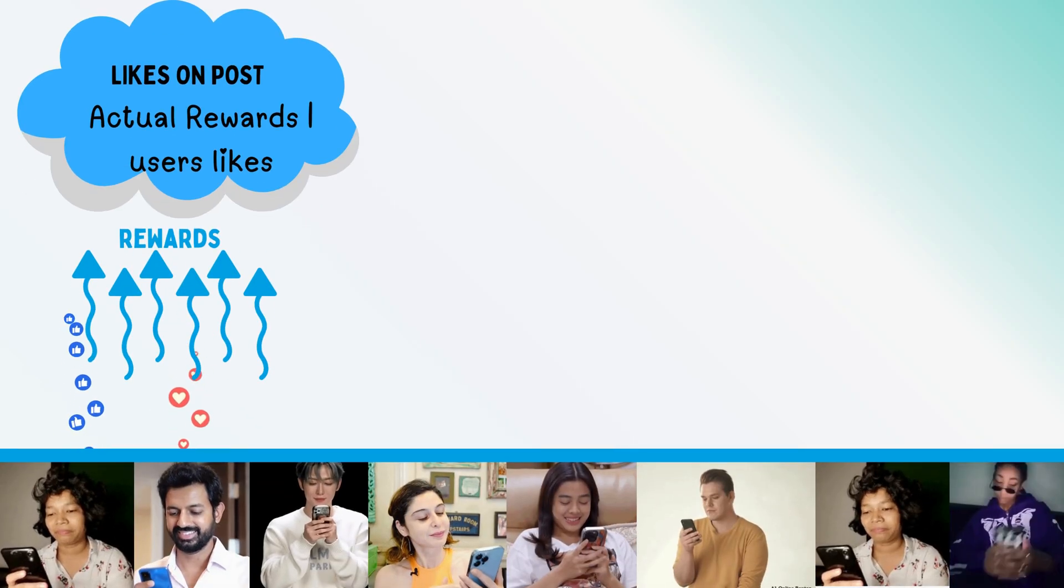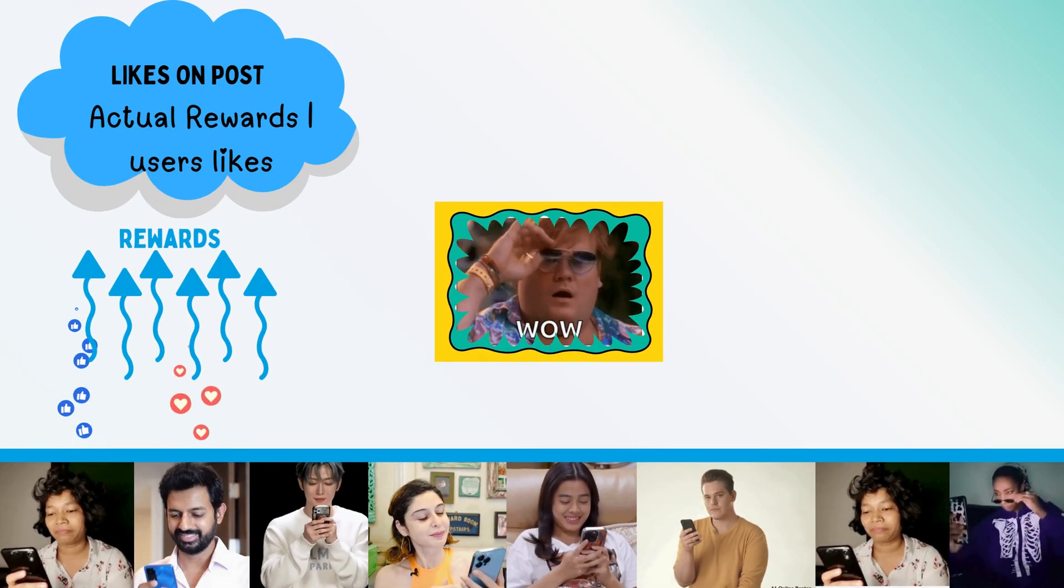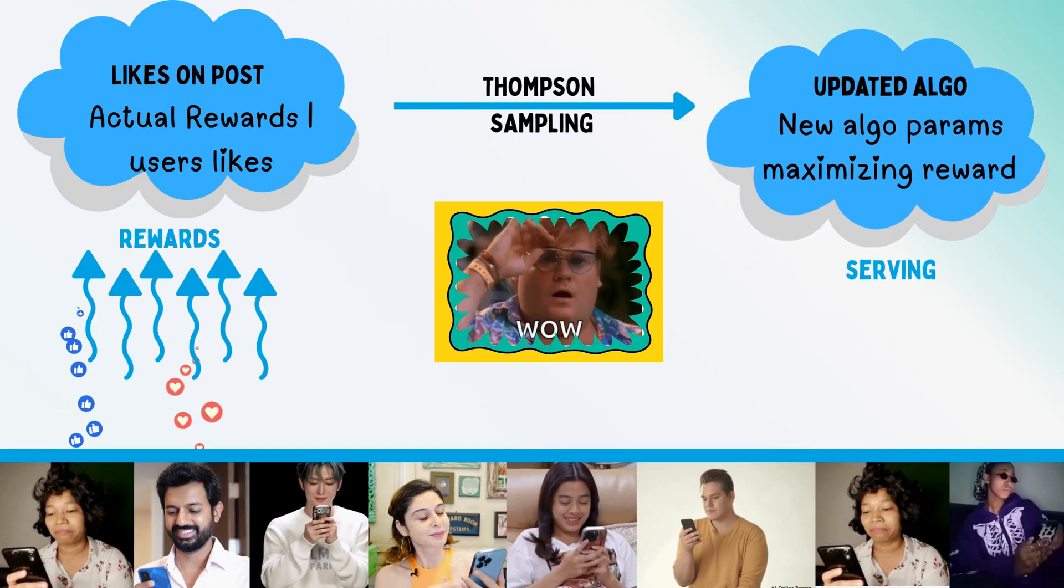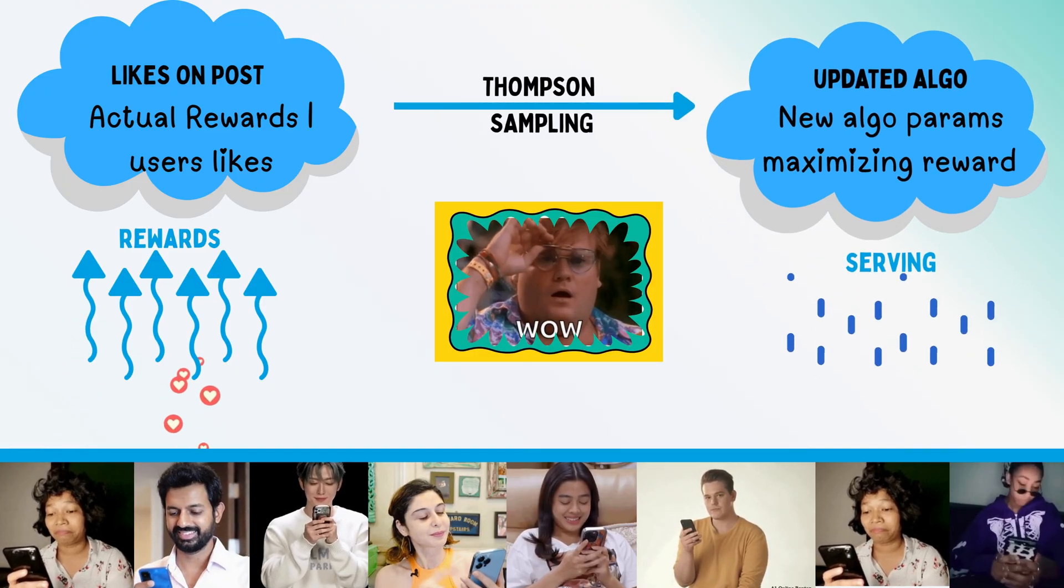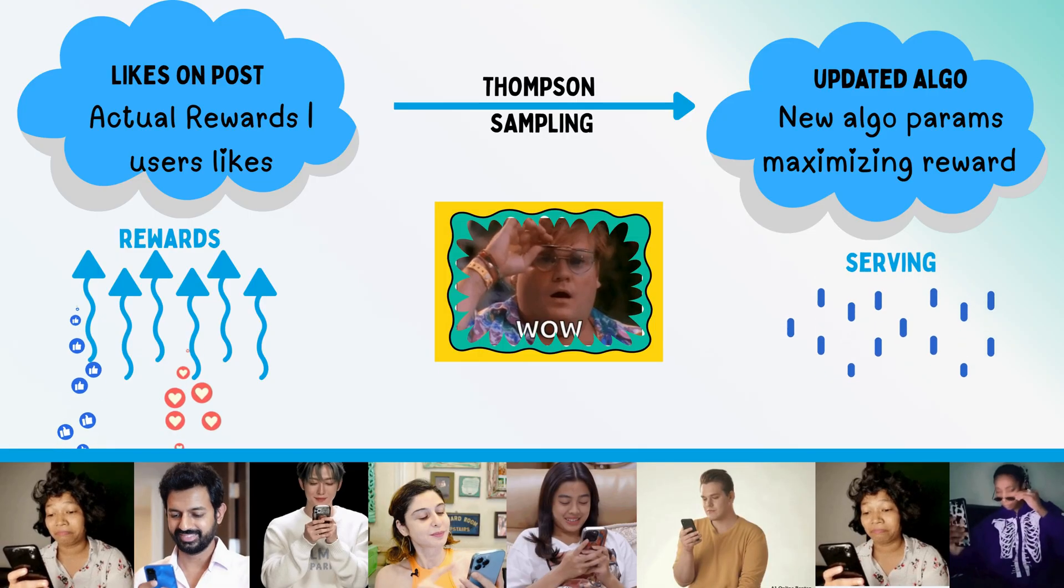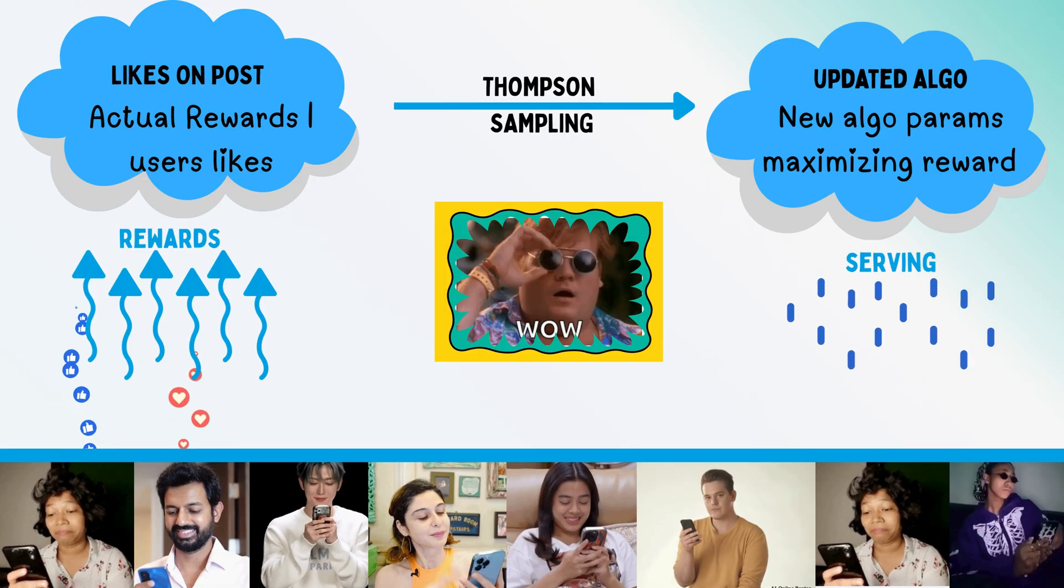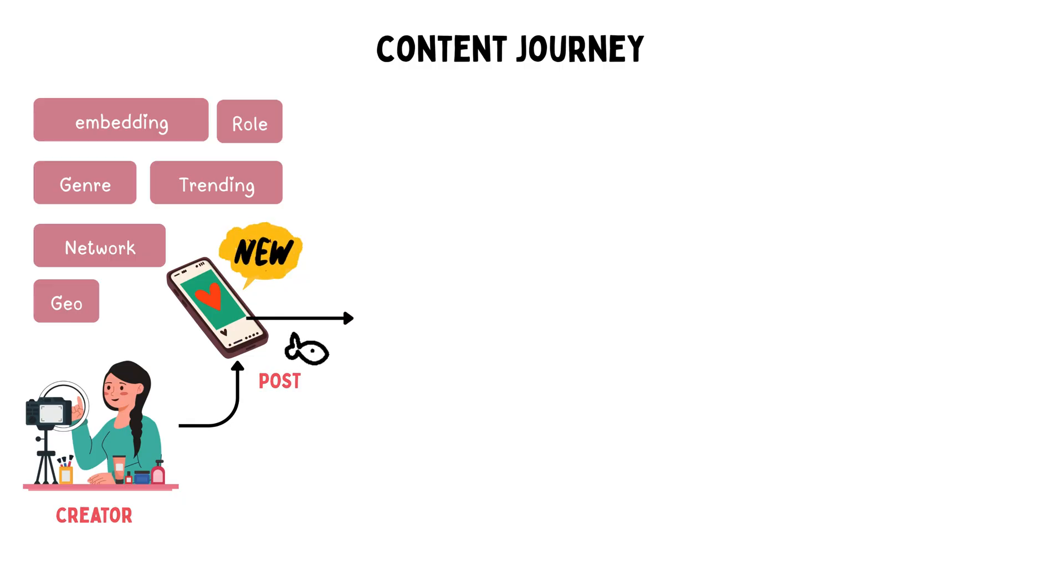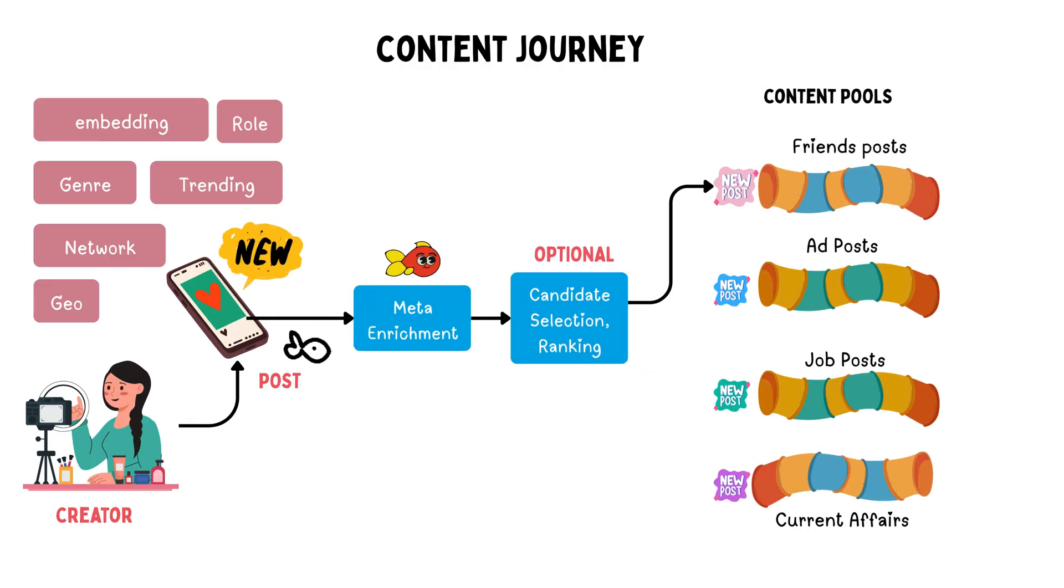Have you noticed that when you like a post or watch it for too long, it suddenly turbocharges LinkedIn into personalizing more such stuff to you? But the question is, how does it do that? How does the algorithm find the sweet spot of parameters that work just for you?